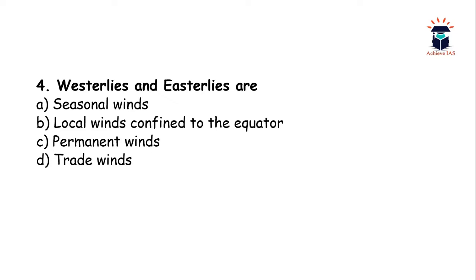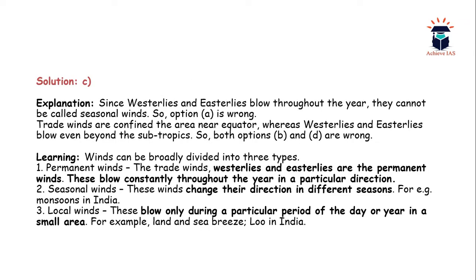Next question: westerlies and easterlies are — (A) seasonal winds, (B) local winds confined to the equator, (C) permanent winds, (D) trade winds. The answer is permanent winds. Westerlies and easterlies blow throughout the year, so they cannot be called seasonal winds. Trade winds are confined to the area near the equator, whereas westerlies and easterlies blow beyond the subtropics — so both B and D are wrong. Key learning: winds are broadly divided into three types — permanent winds (trade winds, westerlies, easterlies), seasonal winds (e.g., monsoons in India), and local winds (e.g., land and sea breeze in India).